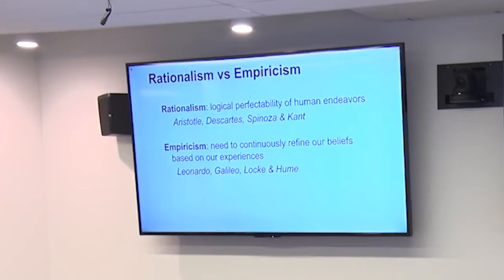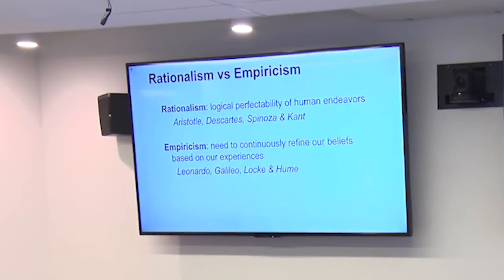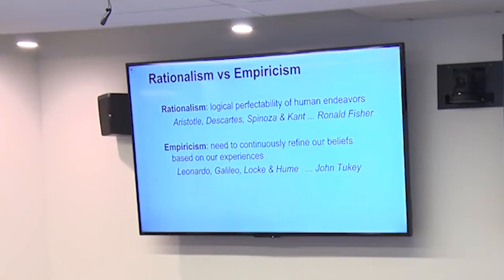Rationalism assumes the logical perfectibility of human endeavors. Aristotle is usually credited with that — sitting on his couch, he could imagine and think of things. He made important observations about vertebrates and invertebrates, but he also made mistakes: he knew men had 32 teeth and assumed women had 28 but never bothered to check. That failure of empiricism led him astray. The alternate view is empiricism — we need to continuously refine our beliefs based on experience, examining and immersing ourselves in the real world.